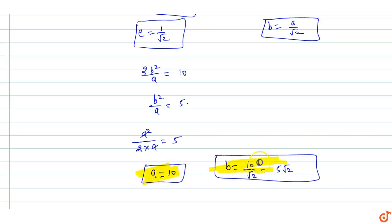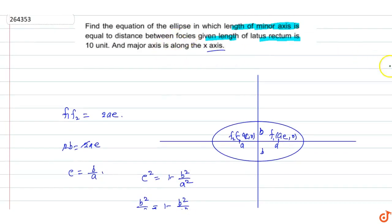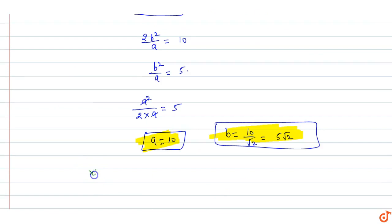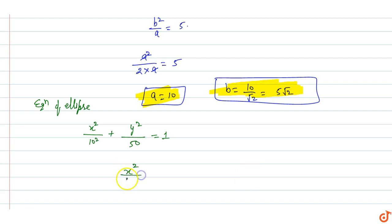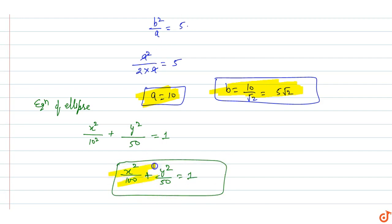Now we find the equation of the ellipse. The standard equation of the ellipse with center at the origin and major axis along the x-axis is x²/a² + y²/b² = 1. Here a = 10 so a² = 100, and b = 5√2 so b² = 50. Therefore the equation of the ellipse is x²/100 + y²/50 = 1.